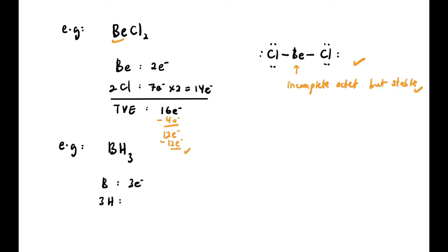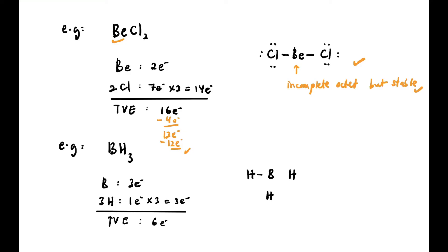Next, BH3: Boron has 3 electrons, Hydrogen has 1 × 3 = 3, so total valence electrons = 6. We make B the central atom with three bonds, using all six electrons. In this case B has incomplete octet but is stable, so we leave it.